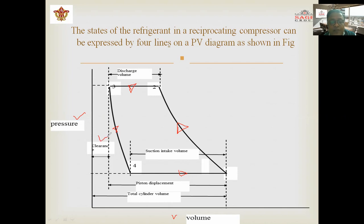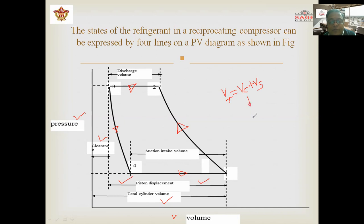The clearance volume is the gap maintained between the cylinder head and the piston. Some displacement takes place as the piston moves from TDC to BDC, allowing air to enter from outside into the engine cylinder. Total cylinder volume equals piston displacement volume plus clearance volume: VT = VC + VS, where VC is the clearance volume.